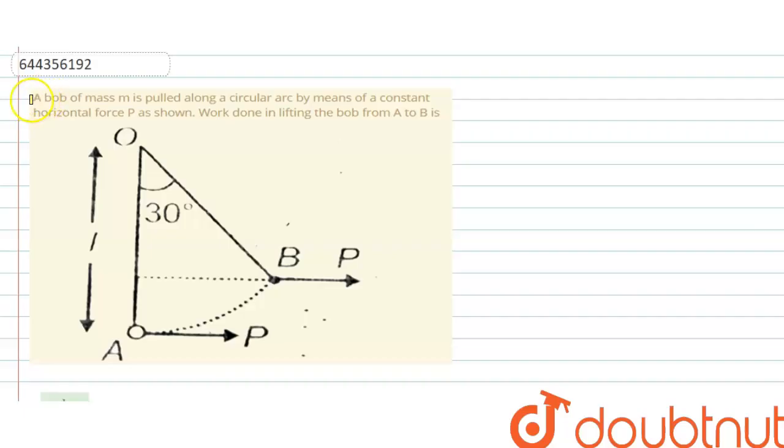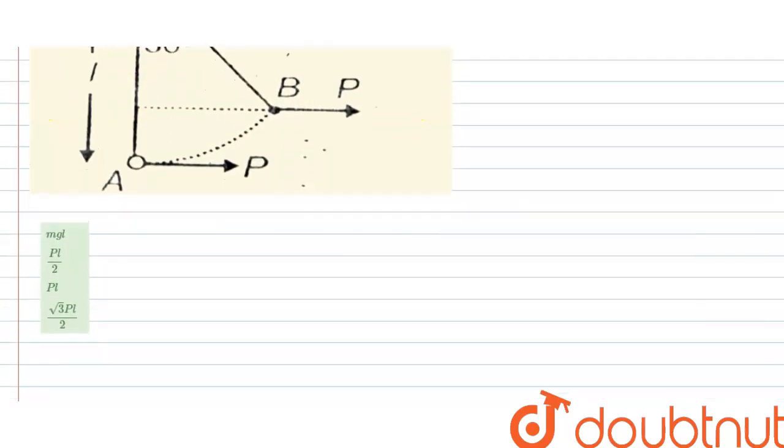Hello everyone, let me explain this question to you. A bob of mass M pulled along circular arc by means of a constant horizontal force P as shown. Work done in lifting the bob from A to B is, and here the diagram is given, and there are four options given.